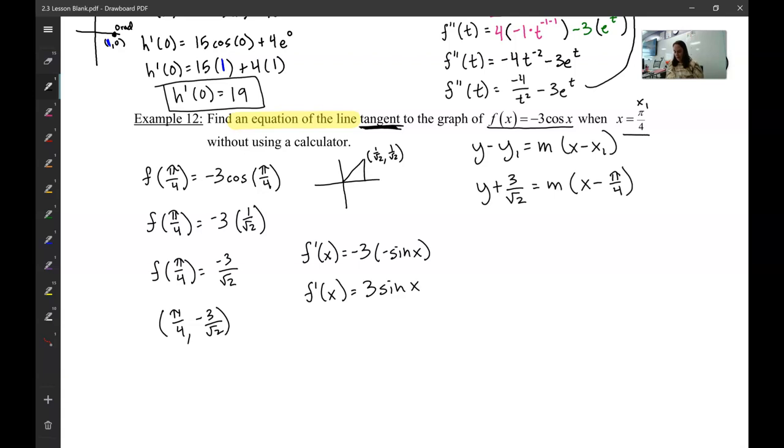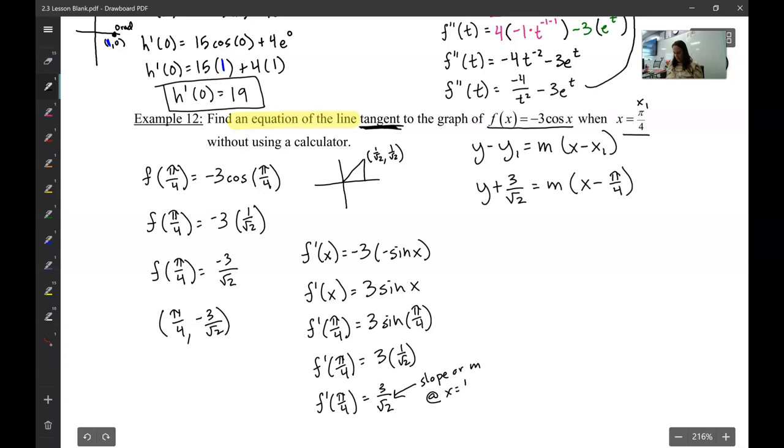Now I wanted the slope at this point. So now I'm going to plug that point into my slope equation. Well sine is my y value. So there's my y value. So f prime of pi fourths is going to be 3 times 1 over root 2, which is going to be 3 over root 2. So that is the slope for m at x equals pi fourths.